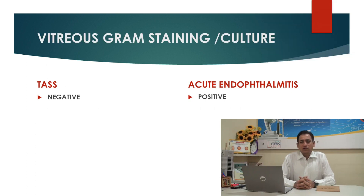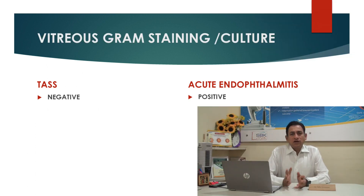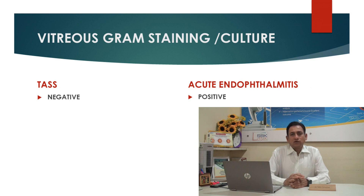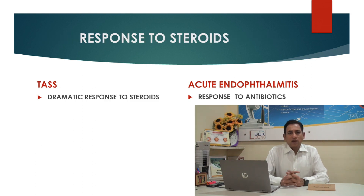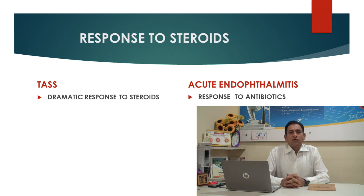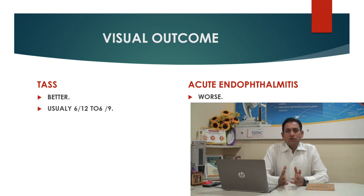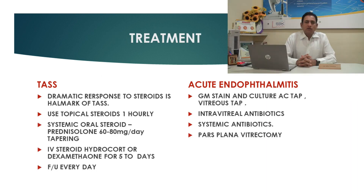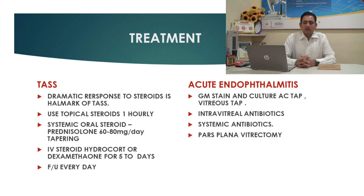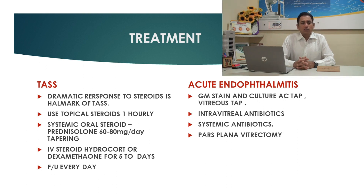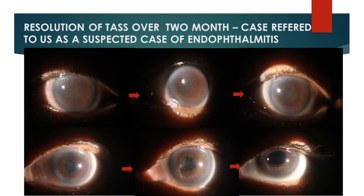Gram stain and culture from vitreous tap and AC tap will be negative in TASS cases, but usually become positive in acute endophthalmitis. There will be a dramatic response to steroids in TASS cases, with visual outcome usually better in TASS compared to acute endophthalmitis. You have to give topical steroids, systemic steroids, and also IV steroids like dexamethasone or hydrocortisone for at least 5 days. These are the photographs showing resolution of TASS following cataract surgery.